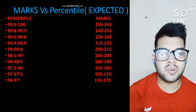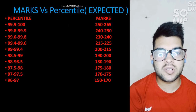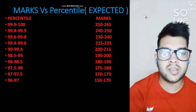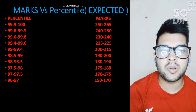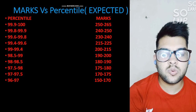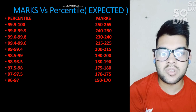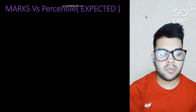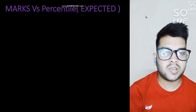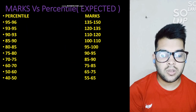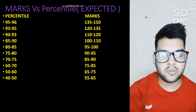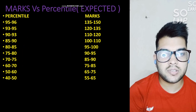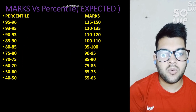For other categories, check by pausing this video. Here is the marks versus expected percentile — it is similar to Shift 1 because there is not much difference in difficulty level between Shift 1 and Shift 2. You can check all the data by pausing the video. I have covered all percentile data from 40–50 percentile up to 99.9 and 200 marks, so you can estimate what you are going to get.